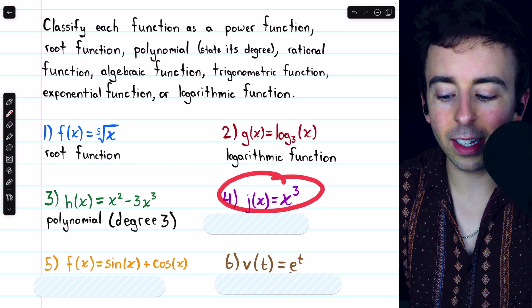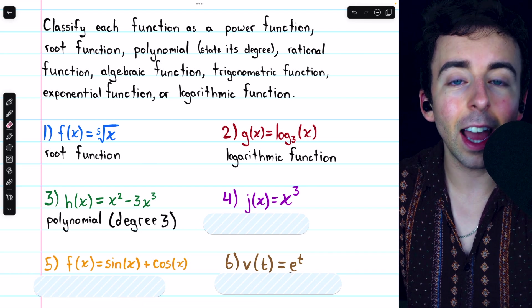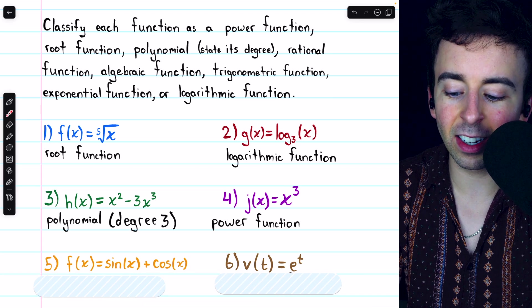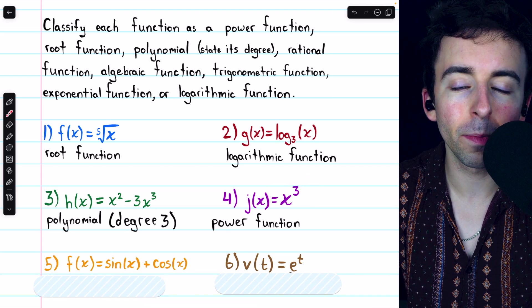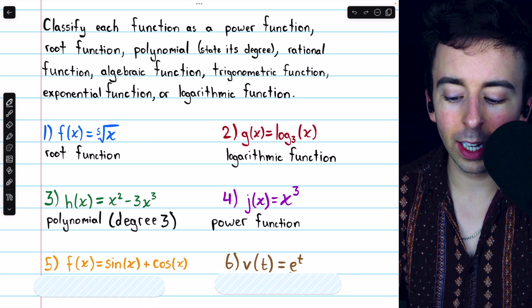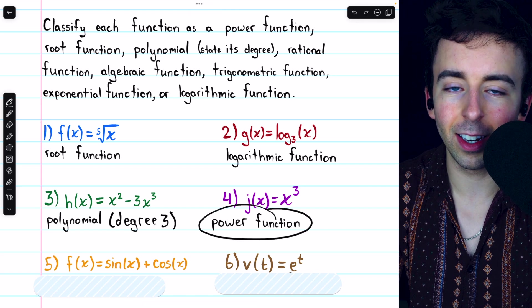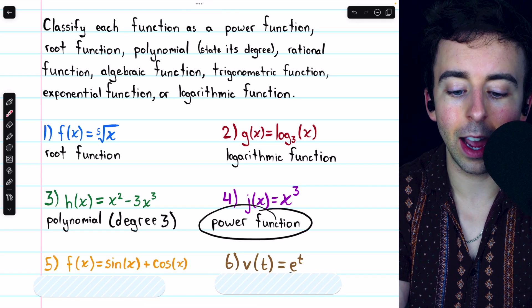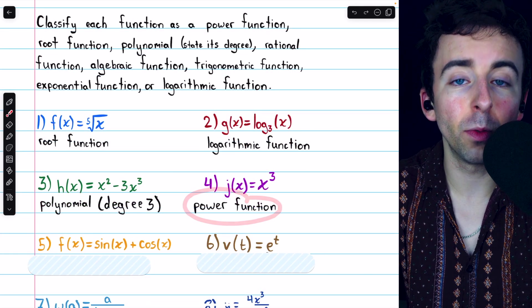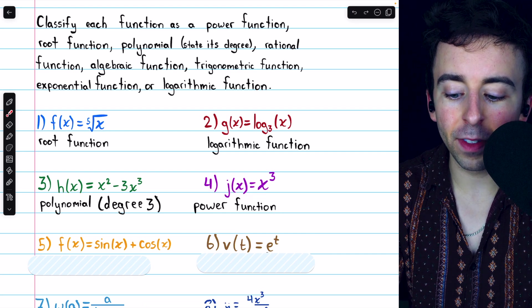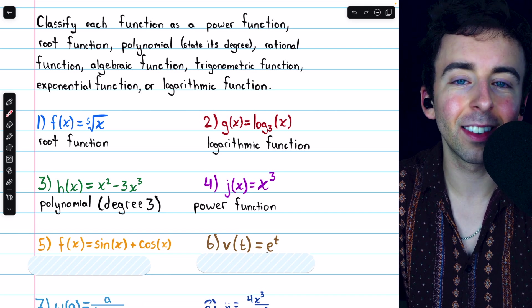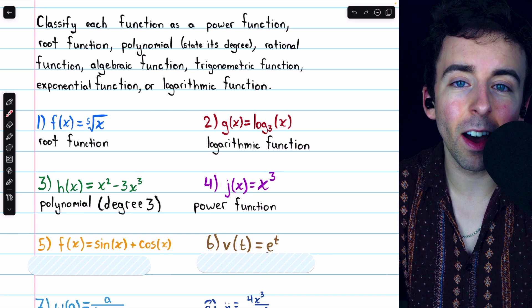Number four, j of x equals x cubed. This is technically a polynomial of degree three, but we could also say that it is a power function. It has a single term x with some power. Power functions can also have coefficients. There could be a four here or five. In this case, the coefficient is just one. Regardless, it is a power function. It also happens to be a polynomial and an algebraic function as well. It's worth recalling that not every power function would be a polynomial. If this power was a non-zero number less than one, that would not be a polynomial. For example, x to the negative three, that's a power function, but it's not a polynomial.